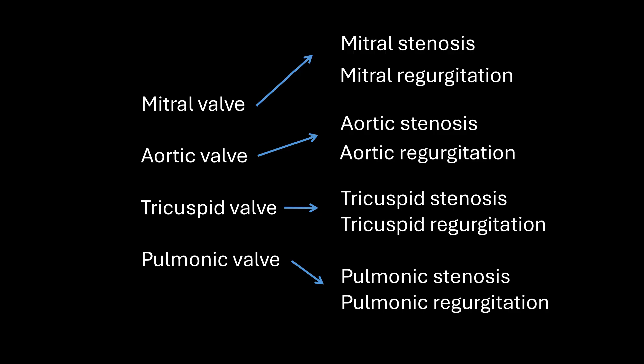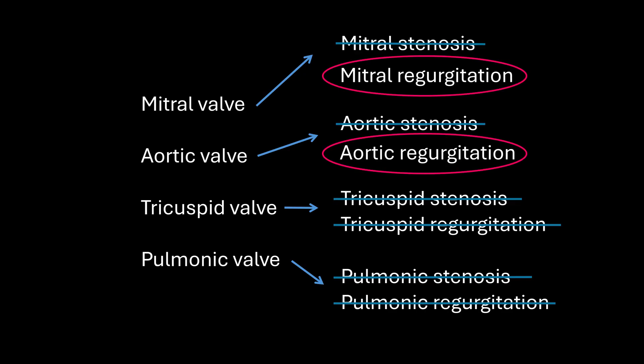But stenotic valves generally don't cause true emergencies. They obviously create problems with other illnesses such as sepsis, but we're not going to talk about valvular stenosis today. And since acute pulmonic and tricuspid regurgitation are rare and don't make you quite as sick, we aren't going to talk about them either. So now we're left with two true valve emergencies: acute severe valvular problems that can cause hemodynamic collapse — acute mitral regurgitation and acute aortic regurgitation.